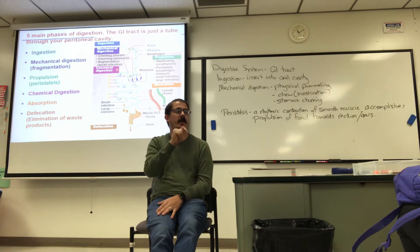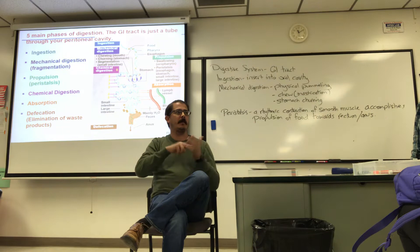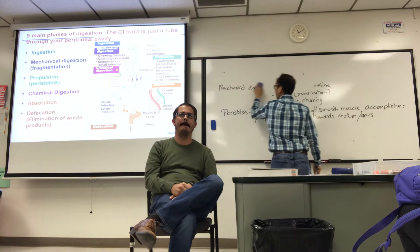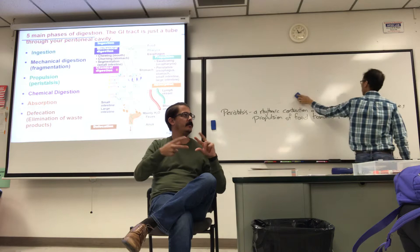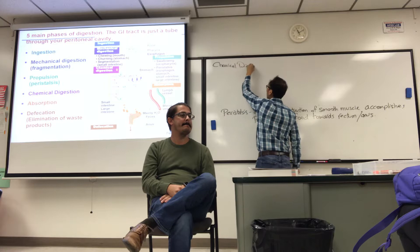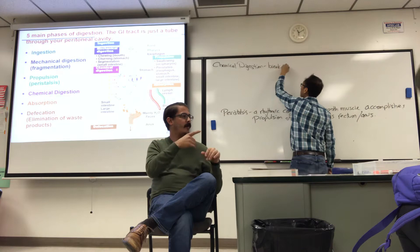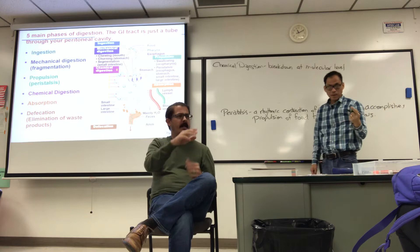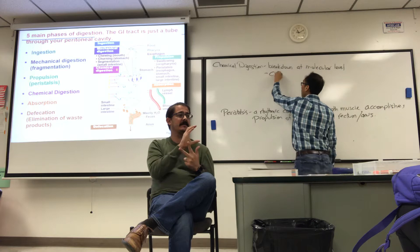Chemical digestion is different from mechanical digestion. The definition is to break food down at the molecular level by enzymes. Consider the three major foodstuffs — carbohydrates, proteins, and fats. For carbohydrates (C-H-O), you break down starches into simple sugars like glucose, going from the polymer to simple sugars.